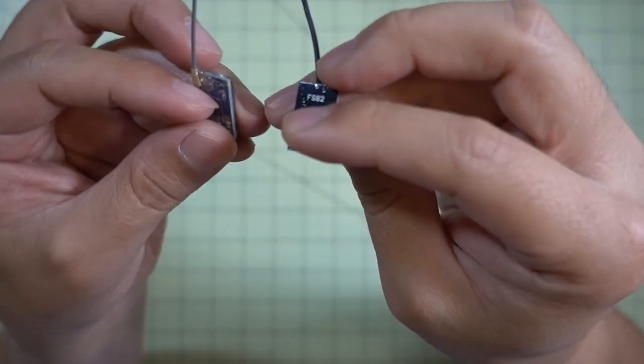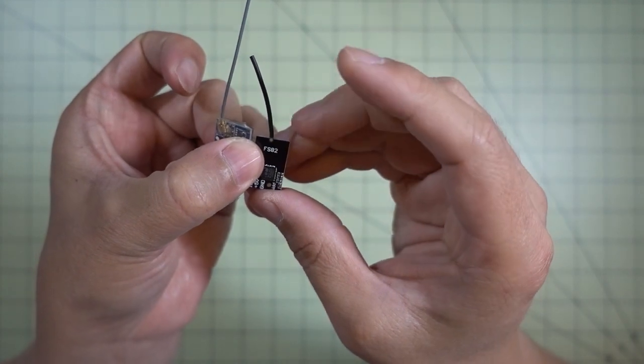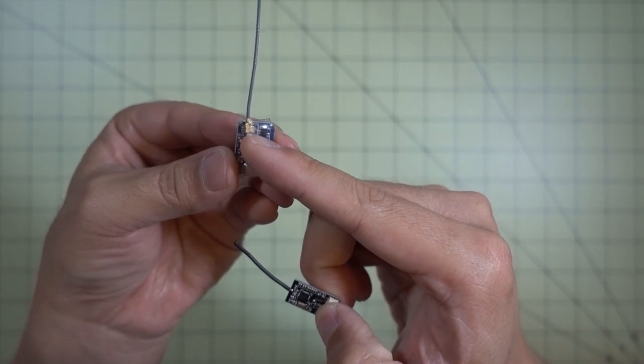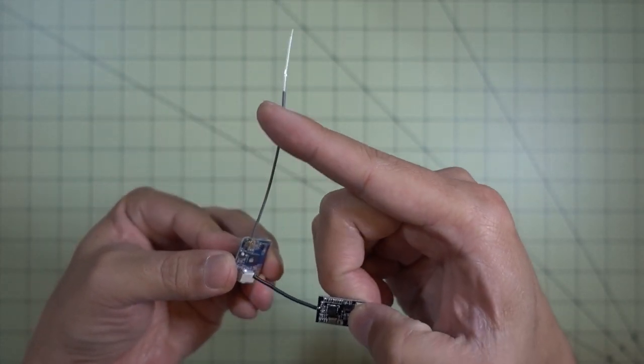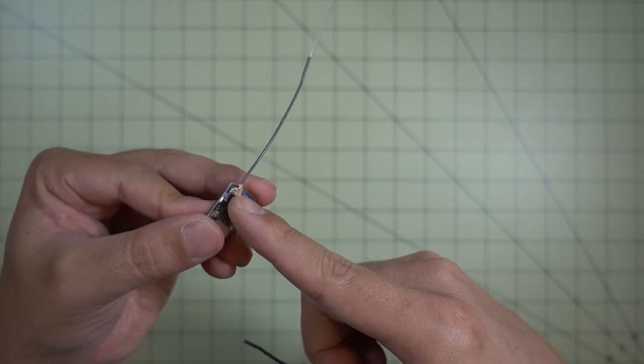And of course, the other big difference is that the micro-antenna here is just soldered directly onto the board. Whereas on the FS-A8S, they have a little micro-FL connector. So if you happen to chop up your antenna, you can always get a replacement to put a new one on here if you need to.